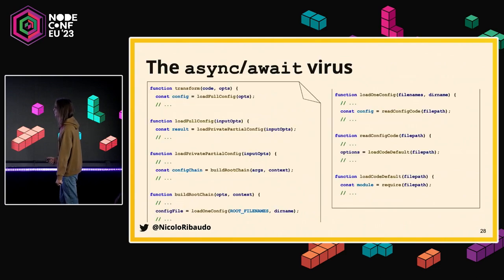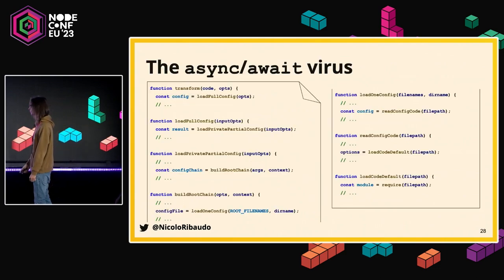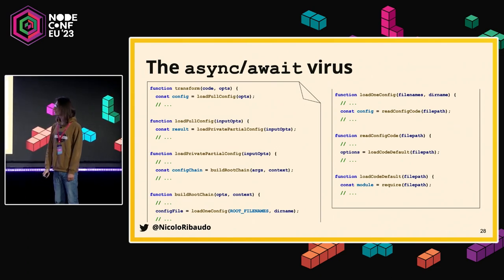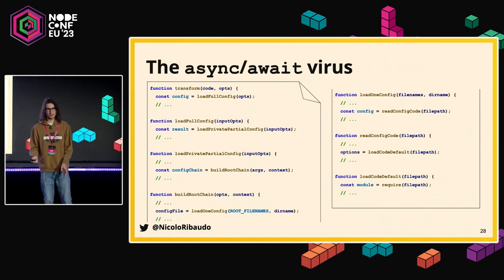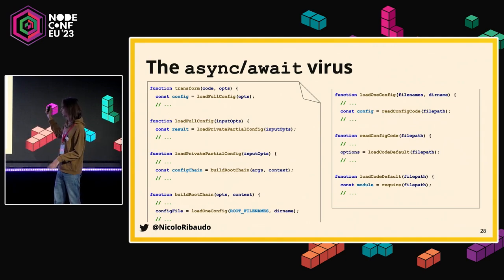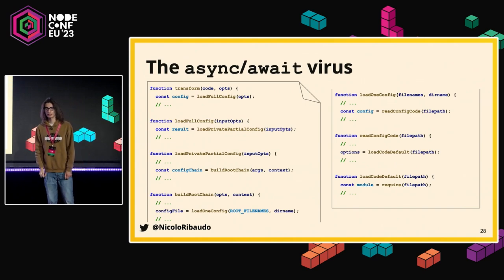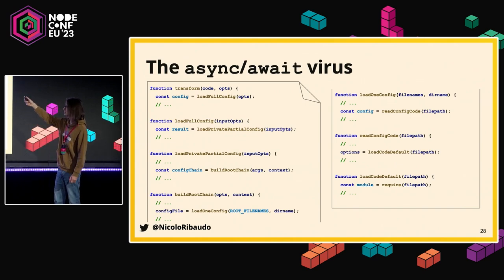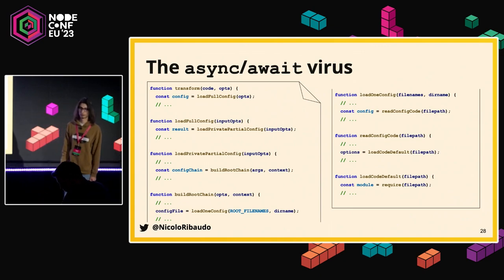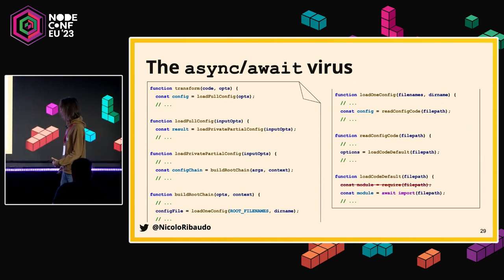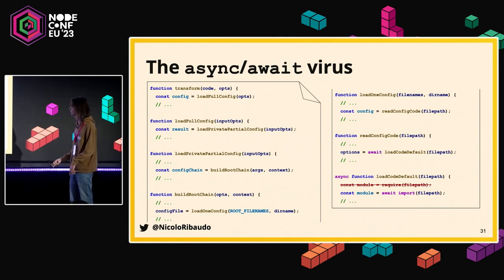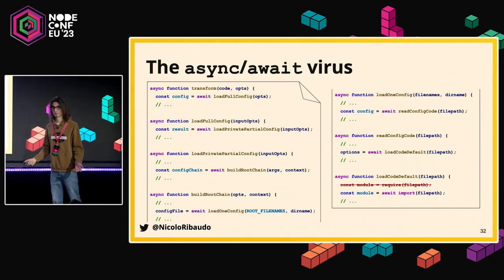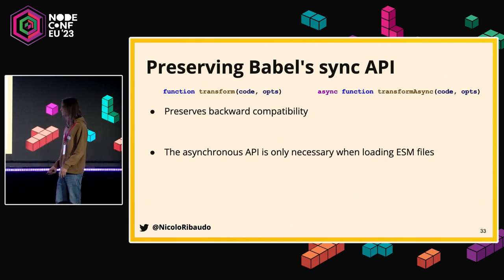This brings us to Chapter 2: making Babel asynchronous. Async/await is very viral — you try to use it somewhere and it spreads everywhere. Here's a short summary of Babel's internals: we have a transform function and deep in the call stack there's a require() call that loads your config file or plugin. If you try to load an ESM file you need await, making the function async, which then spreads async/await everywhere. We wanted to preserve backwards compatibility so only users using ESM would need the async version.